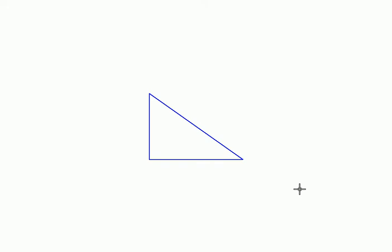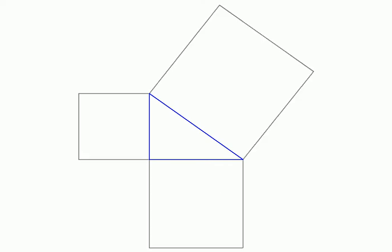Otherwise most people end up mugging this proof without understanding it. Here is a right angle triangle given to us and we are going to construct squares on its sides. Why? Because Pythagoras theorem deals with squares of sides and hypotenuse, and if you construct squares like this then their areas will be related to the square of these sides.